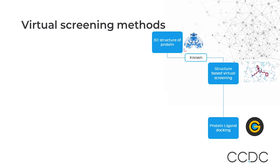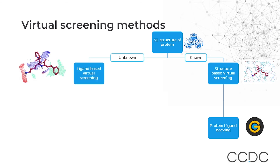If the 3D structure of the target is not known, then a ligand-based method is the first choice. Ligand-based screening methods are more robust than docking into homology models or APO structures, though these can also differ depending on what information is available.